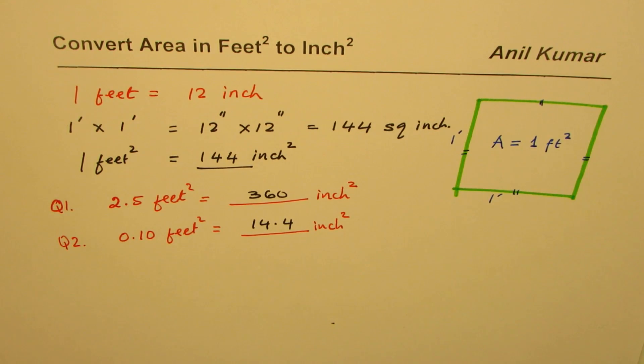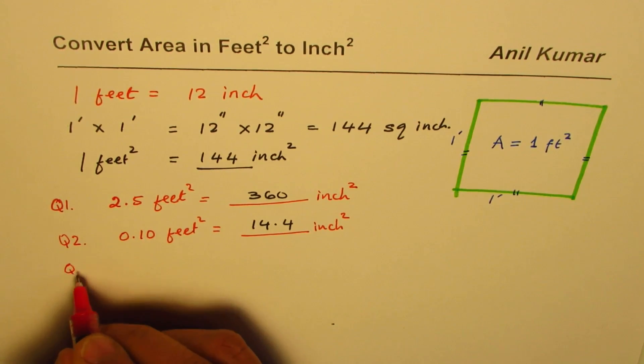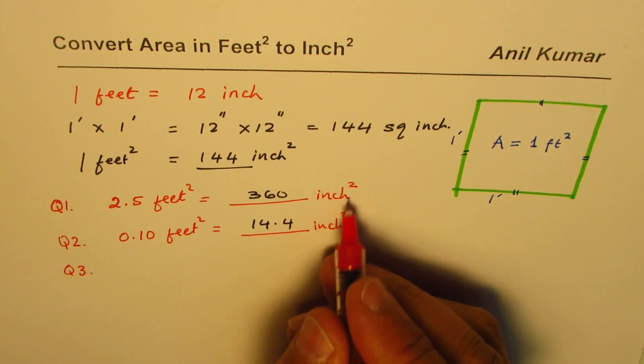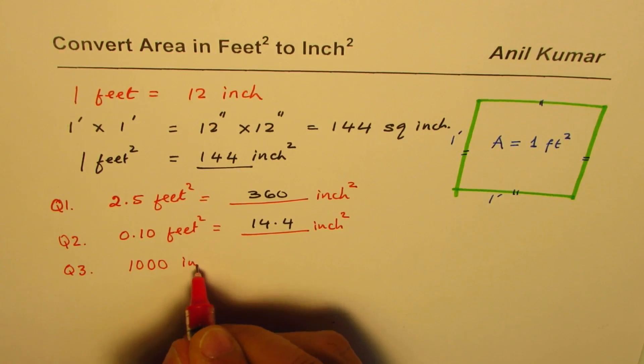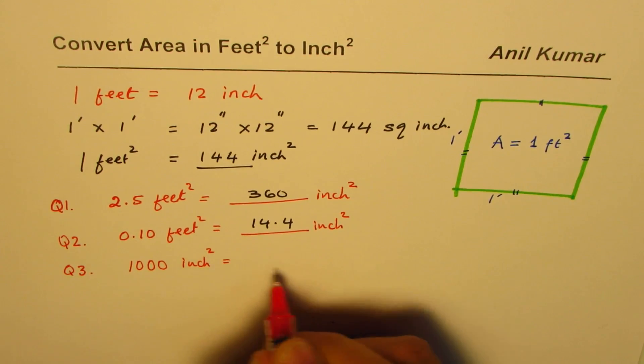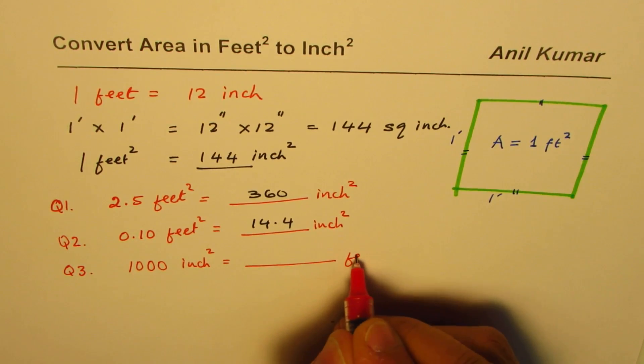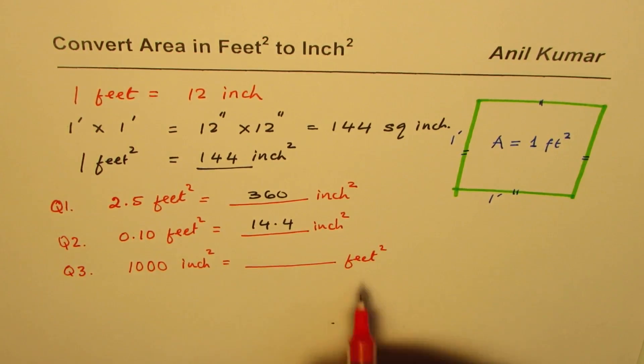That's how you convert from square feet to square inches. For the third question: convert 1000 square inches to square feet. Let this be your exercise. I'm Anil Kumar, I hope you found this helpful. Thank you and all the best.